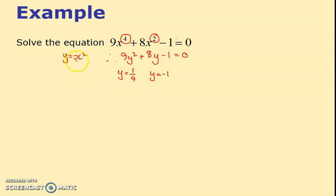Y was x squared, so I can now write x squared equals a ninth or x squared equals minus 1. Now I solve for the x. X is the square root of a ninth and you get a third, or x is minus a third.